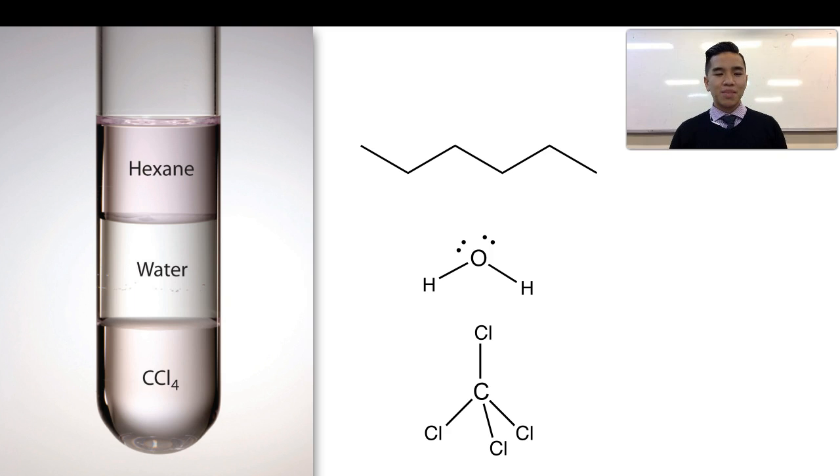When we look at the ability for hexane and CCl4 to mix with water, we would say that they would form immiscible layers. Why would that be the case? Well, what we know is that water is a polar substance, a polar solvent. If it doesn't seem to mix with hexane and CCl4, that would suggest that these two have different polarities.